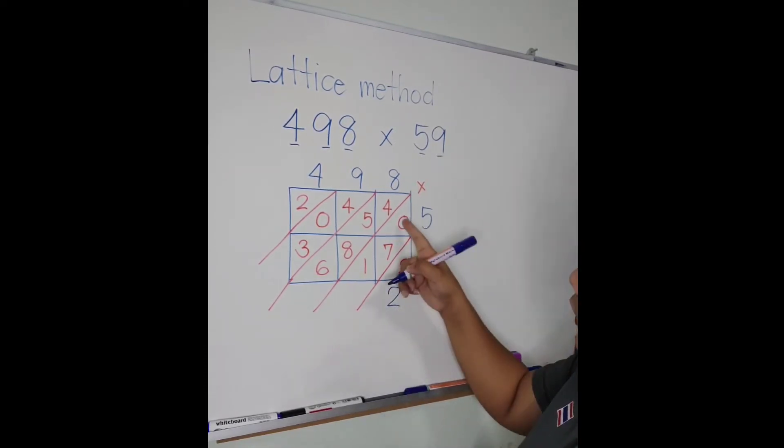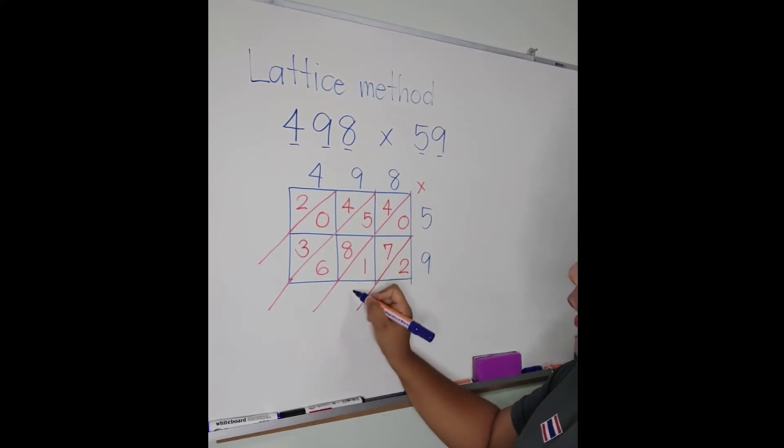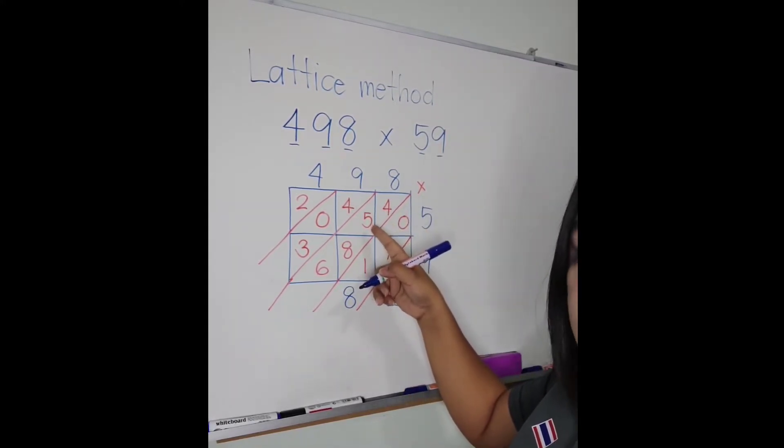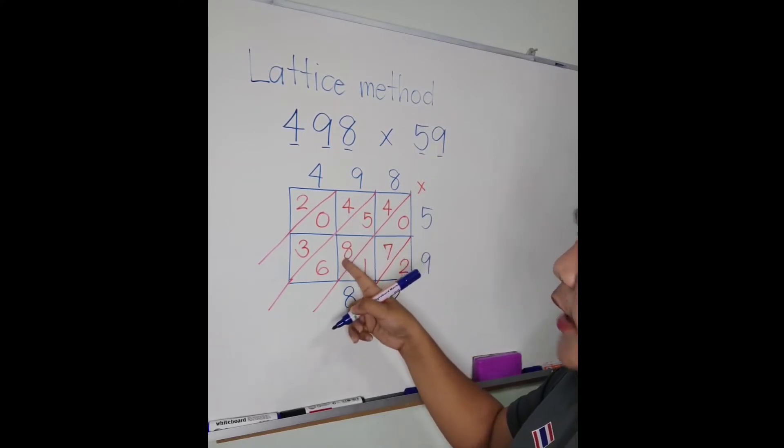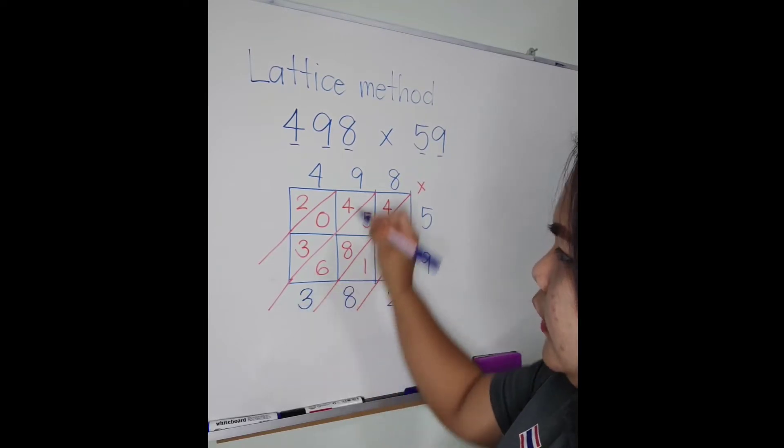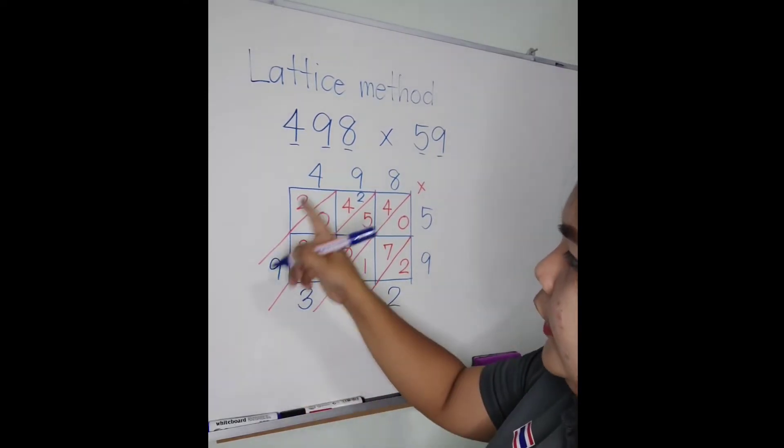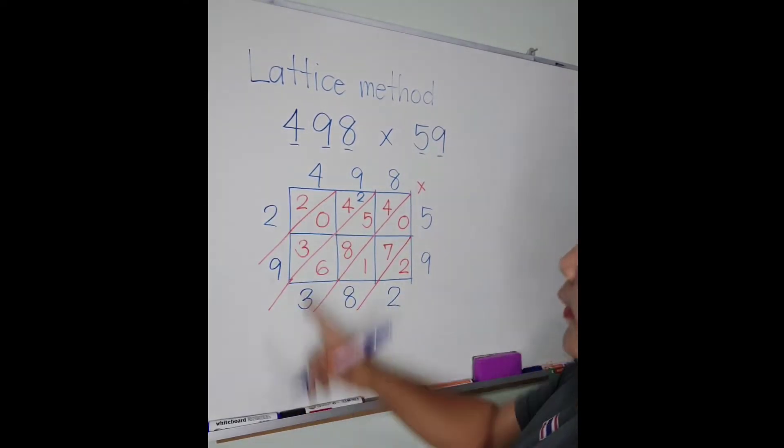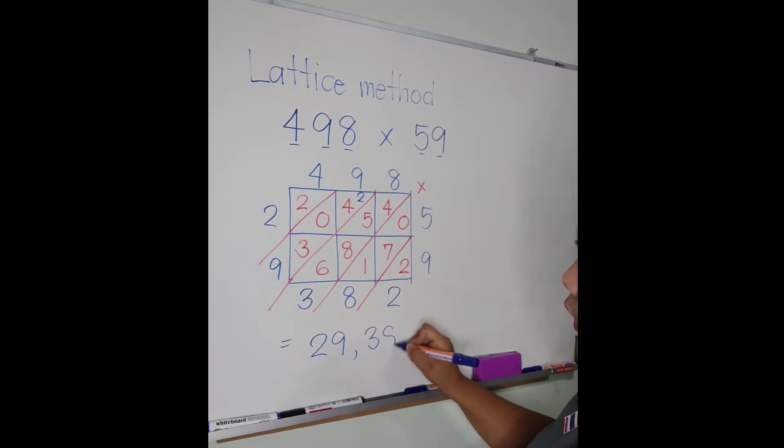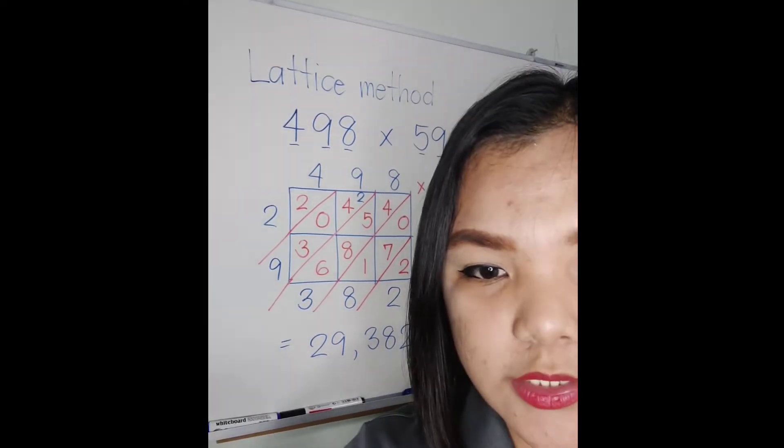So 2, bring down here. 0 plus 7 is 7, plus 1 is 8. 4 plus 5 is 9, plus 8 is 17, plus 6 is 23, carry 2. 2 plus 4 is 6, plus 3 is 9, and then 2. What are the digits? So we have 29,382.